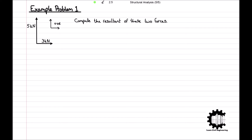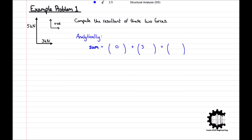We will start off with an example where we have to compute the resultant force of two separate forces. The diagram shows a vertical force of 5kN and a horizontal force of 3kN. Note that we are taking the x and y coordinate directions to be positive, so our forces are positive. Now we have to compute the resultant of these two forces. Analytically, we can compute the resultant by summing the horizontal magnitudes and then the vertical magnitudes. So the horizontal component of the resultant is equal to zero plus 3kN, which equals 3kN, and the vertical component of the resultant is equal to 5kN plus zero, which equals 5kN.